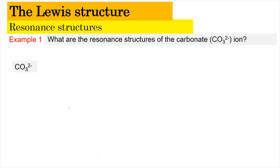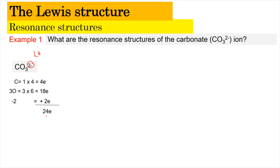Now let's look at example one: what are the resonance structures of the carbonate ion, CO3 2-? As usual, we need to draw the Lewis structure first. Carbon has 4 valence electrons, and 3 oxygen atoms contribute 3 times 6 equals 18 electrons. The 2- charge means we add 2 more electrons, giving a total of 24 valence electrons. This 24 electrons will be used to construct the Lewis structure, with carbon as the central atom since it is more electropositive.